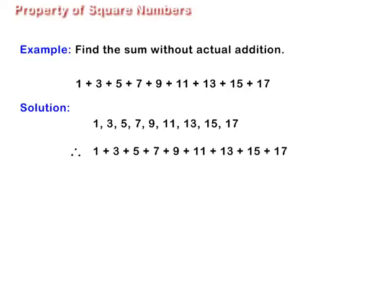Therefore, 1 plus 3 plus 5 plus 7 plus 9 plus 11 plus 13 plus 15 plus 17 is equal to 9 multiplied by 9, which is equal to 81.